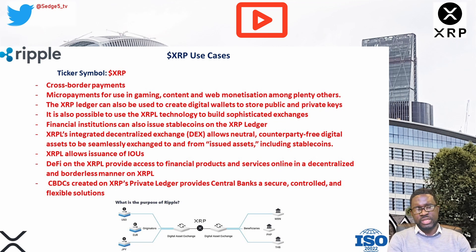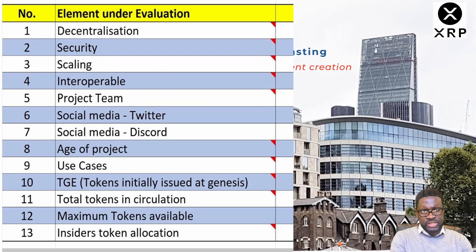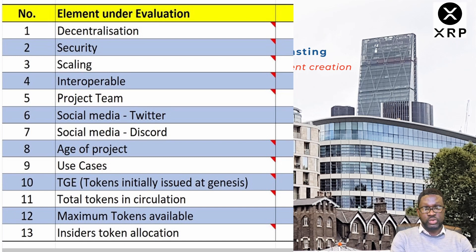As part of our evaluation of XRP, we are going to apply our 13 elements. Those 13 elements are: decentralization, security, scalability, interoperability, the project team, use cases, social media presence via Twitter, social media via Discord, before we jump into the project's tokenomics.